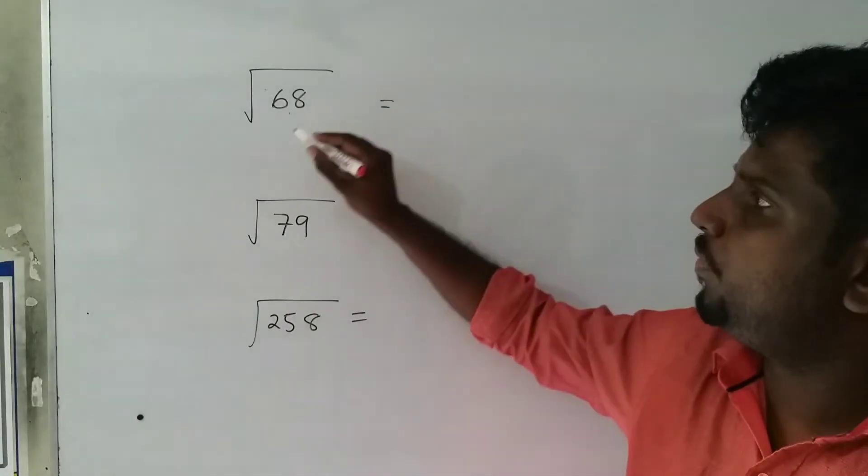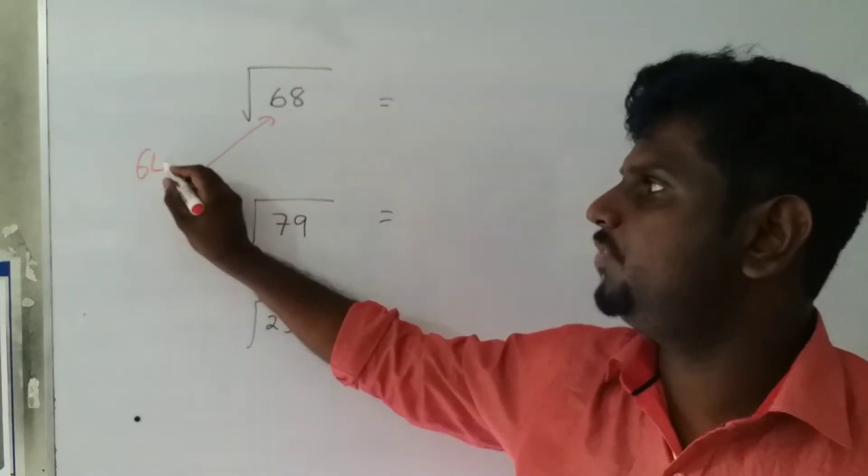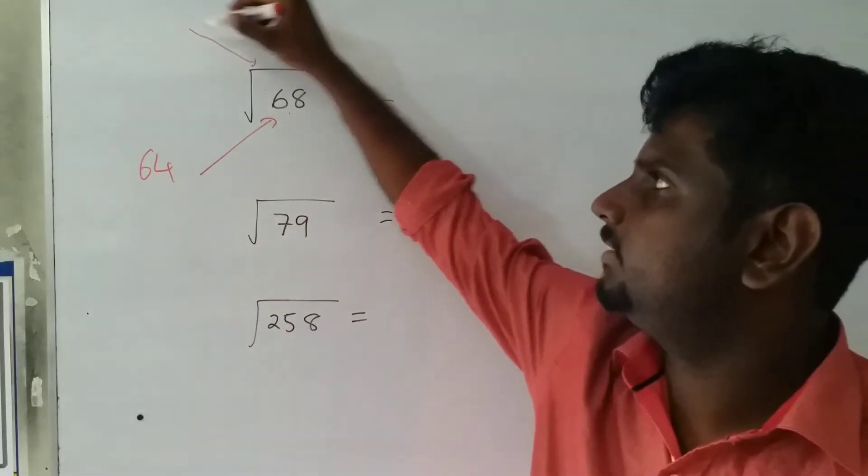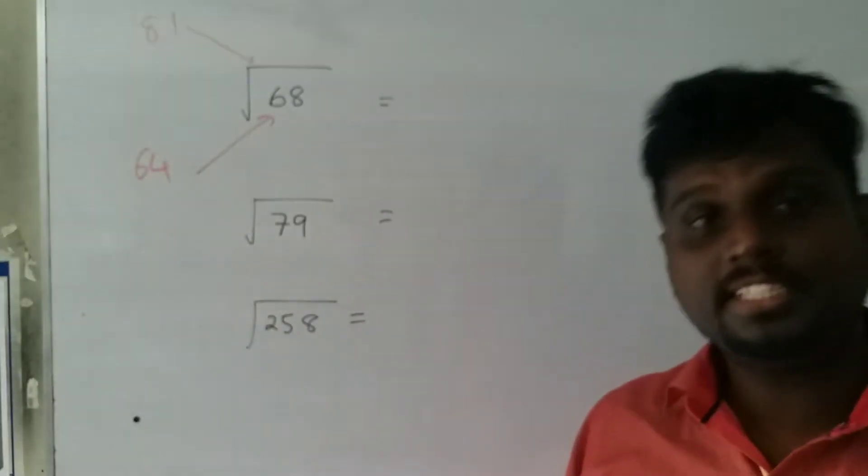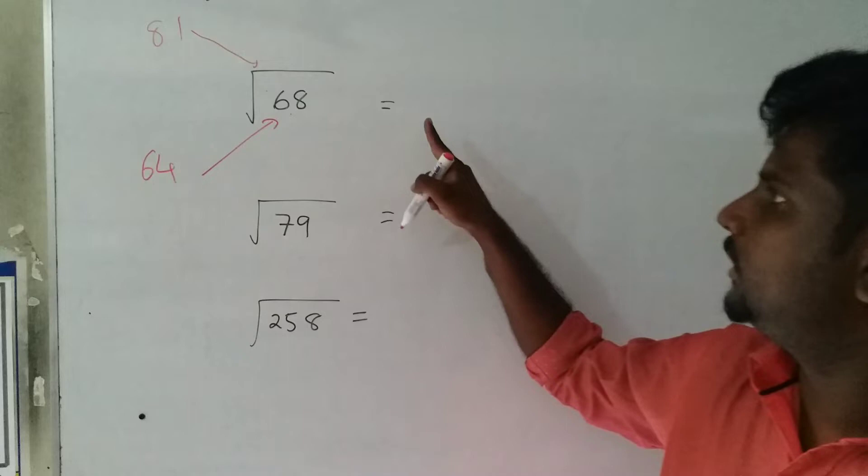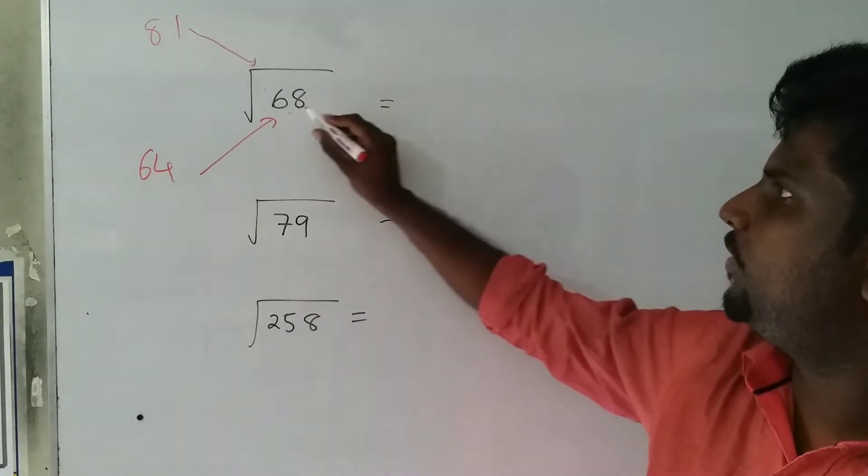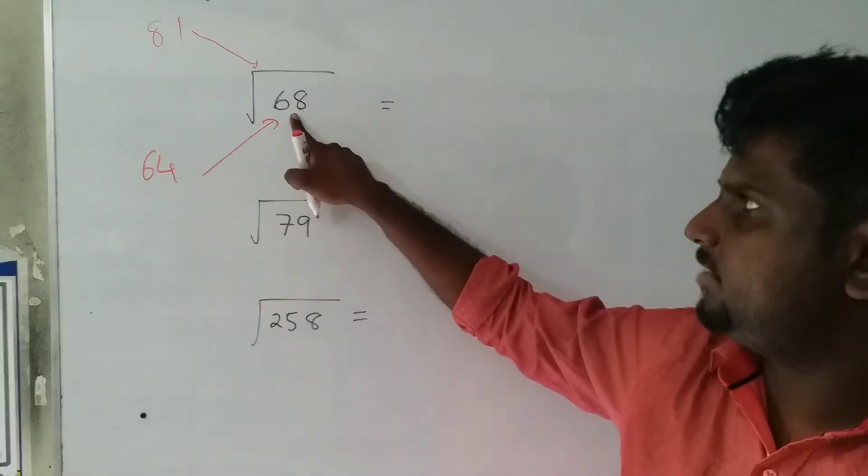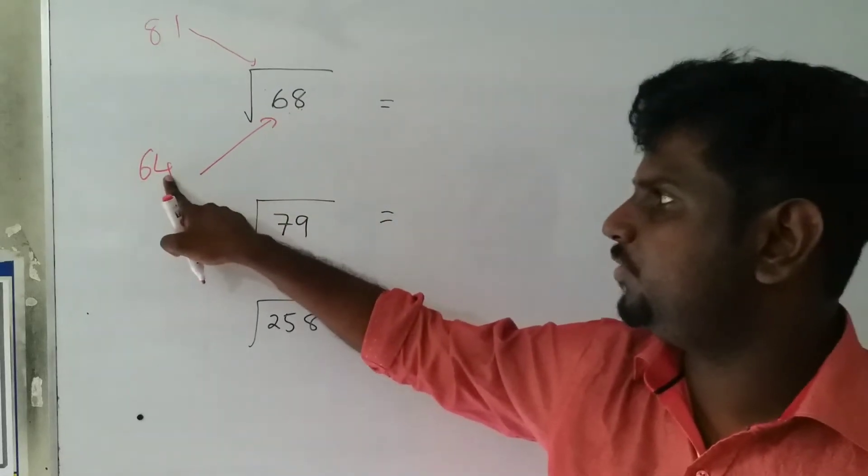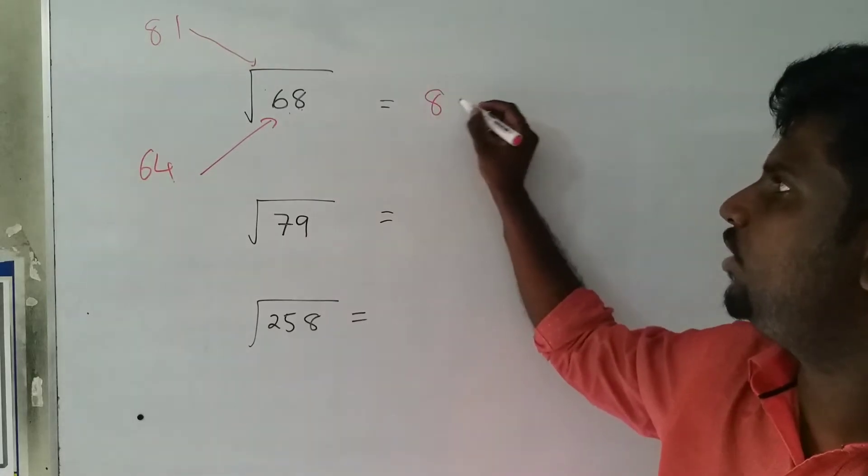So what we are going to do - 68 is very near to 64 and 81, but it is very close to 64. So first of all, 68 is very close to 64. What is the square root of that? 8. So definitely it's going to be 8 plus something.